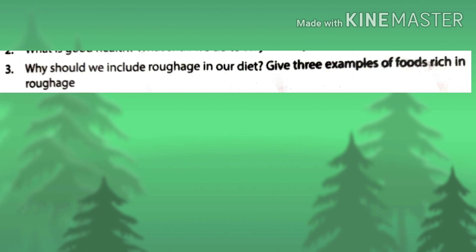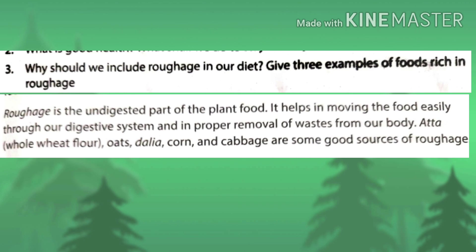Third question: why should we include roughage in our diet? Give three examples of food rich in roughage. Roughage is the undigestible part of plant food. It helps in moving the food easily through our digestive system and in proper removal of waste from our body. Whole wheat flour (atta), oats, dalia, corn, and cabbage are some good sources of roughage.